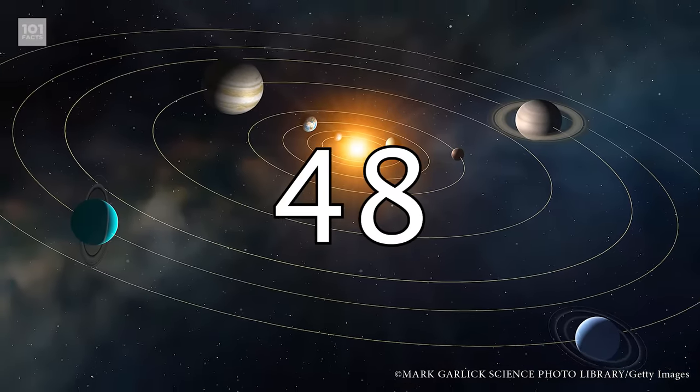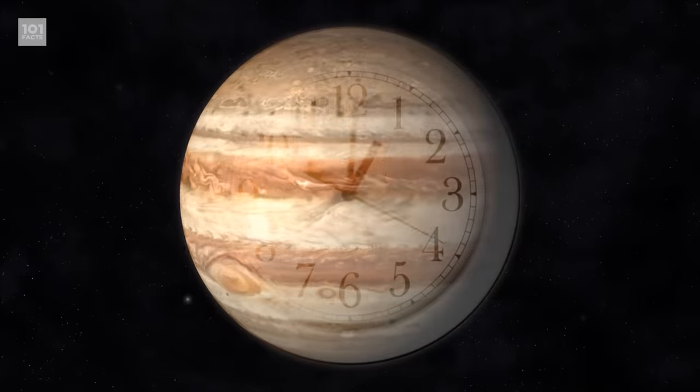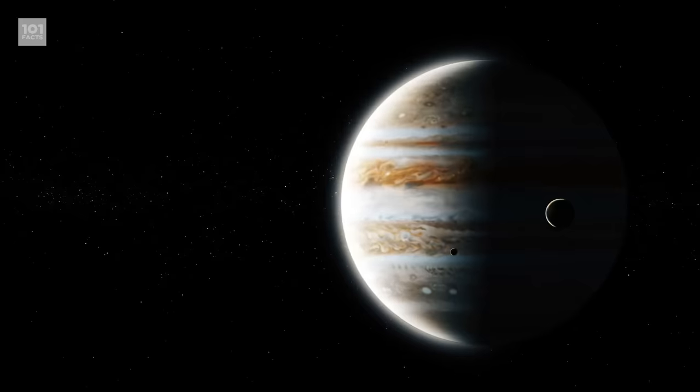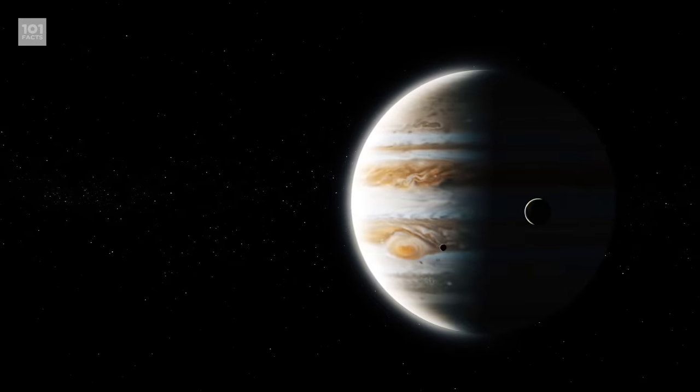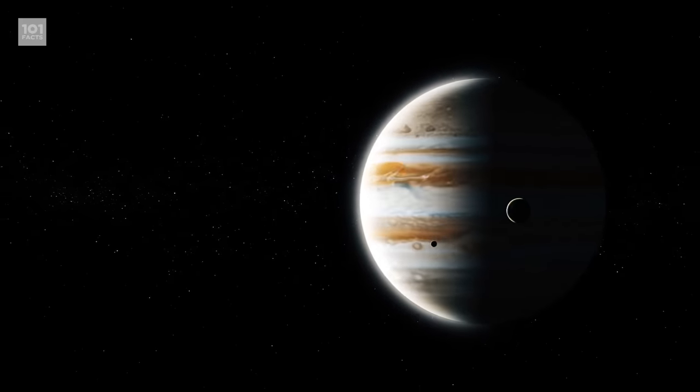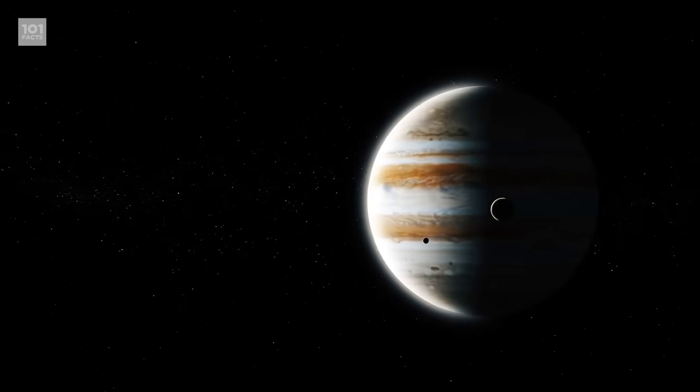A day on Jupiter is just around 10 hours long, the fastest of any planet in the solar system. A year on Jupiter, on the other hand, is the equivalent of 12 Earth years, because it has quite a slow orbit around the sun. Probably because it's massive.